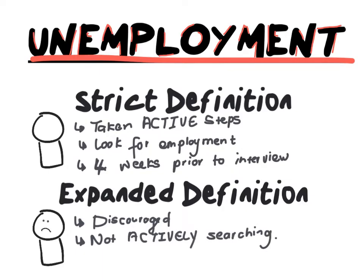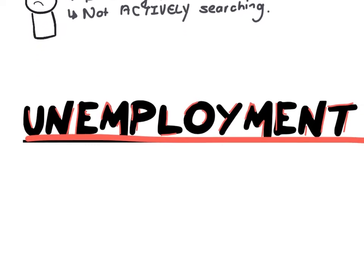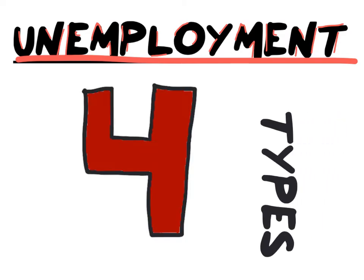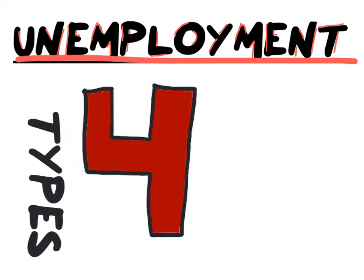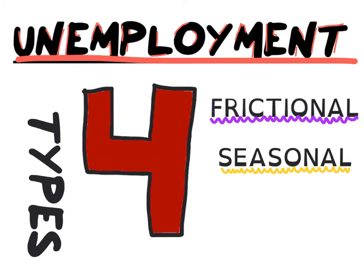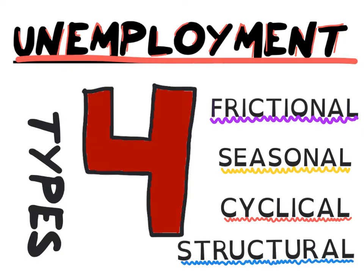Now that you know the definition of the unemployment rate and the distinction between the strict and expanded definition, let's talk about the four types of unemployment. Unemployment can be categorized into four broad categories: frictional, seasonal, cyclical, and structural unemployment.